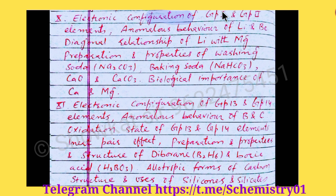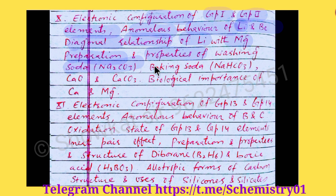The next chapter is S-Block Elements. You will study the electronic configuration of Group 1 and Group 2 elements — alkali and alkaline earth metals. The anomalous behavior of lithium and beryllium is very important, and similarly the diagonal relationship between lithium and magnesium. You will also study a few important compounds — their preparation and properties — like washing soda, baking soda (sodium bicarbonate), quick lime, slaked lime, and calcium carbonate. You should also remember key points regarding the importance of calcium and magnesium.